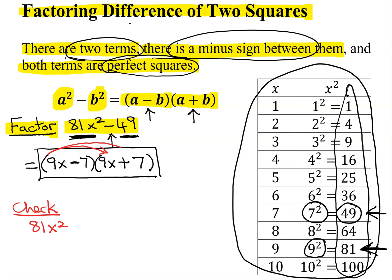Outer, 9x times 7 is plus 63x. Inner, 9x times negative 7, negative 63x. And last terms, negative 7 times positive 7 is negative 49.